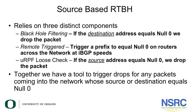For source-based RTBH, we rely on three distinct components: the black hole filtering, the remote trigger, and the URPF loose check. With the black hole filter and the URPF loose check, either the destination address or the source address that equals null zero gets dropped. With the remote trigger, a prefix set to null zero is propagated to all routers across the network at IBGP speeds. Together, these three components provide a tool to trigger drops for any packets entering the network whose source or destination equals null zero, allowing for much better granularity when doing RTBH.